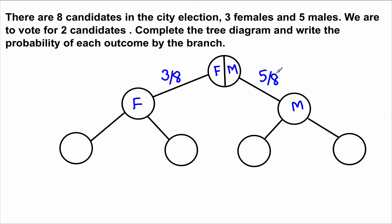You cannot repeat the same candidate, so this is like drawing without replacement. Now for the second candidate: if our first pick was female and we select another female, the probability is 2 out of 7. By this time one of the eight candidates is already chosen and one of the three females is already chosen, so there are two females out of seven total candidates. If the second candidate is male in this scenario, we still have five males out of seven total candidates.